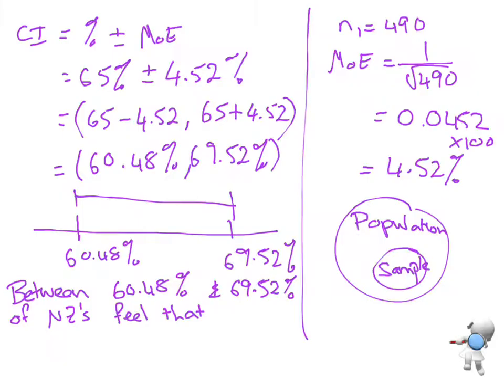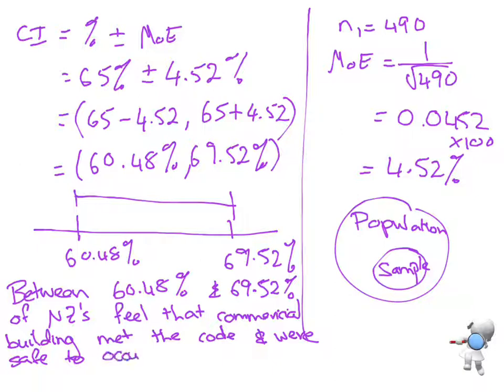it was the commercial building, commercial buildings met the code and were safe to occupy. Okay, so that's interpreting the confidence interval.